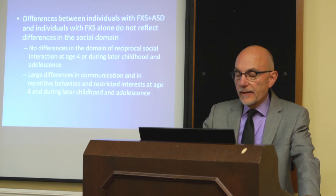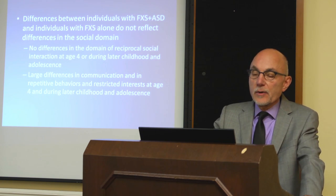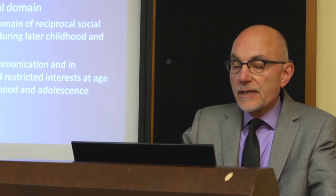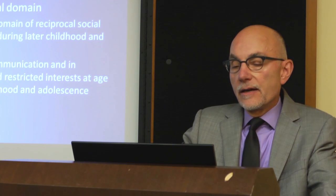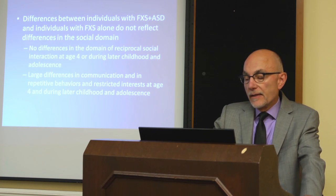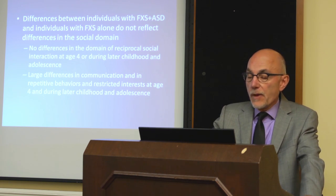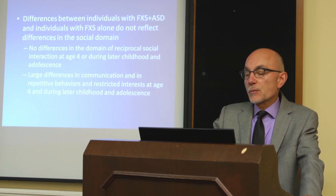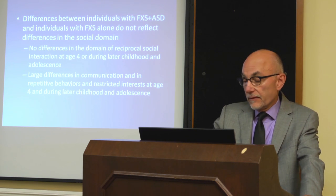In a final study, also led by Andrea McDuffie, we looked only at individuals with fragile X syndrome and compared those who met criteria for autism versus those who did not. Interestingly, we saw no differences between these two groups in social skills — specifically in reciprocal social interaction, one of the key domains that defines autism. We did see differences in communication and very large differences in repetitive and restricted interests, both in childhood and adolescence. It's puzzling that the difference between fragile X individuals who do and do not meet autism criteria is not social in nature, which seems to get at the very heart of what autism is.